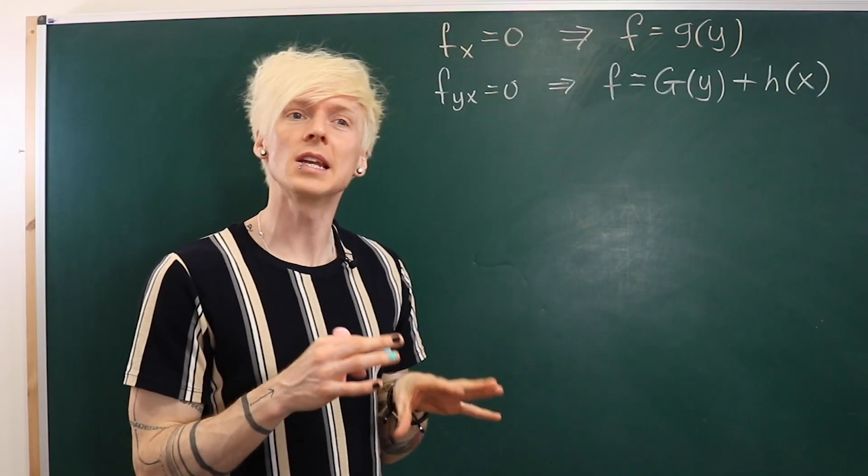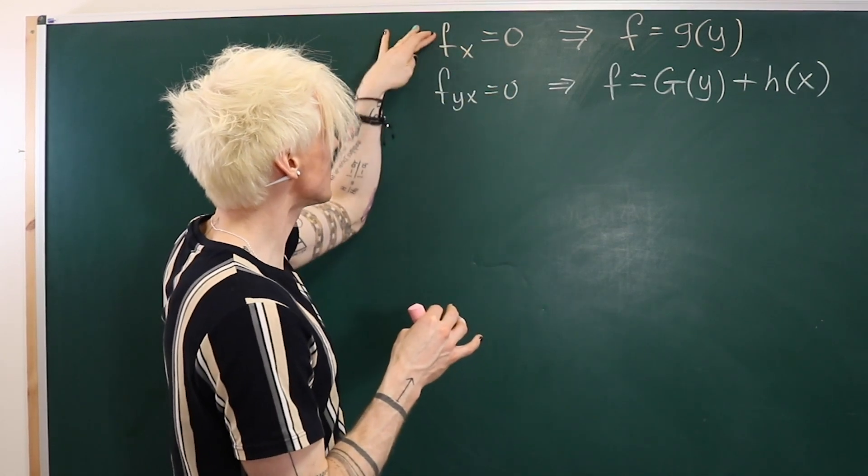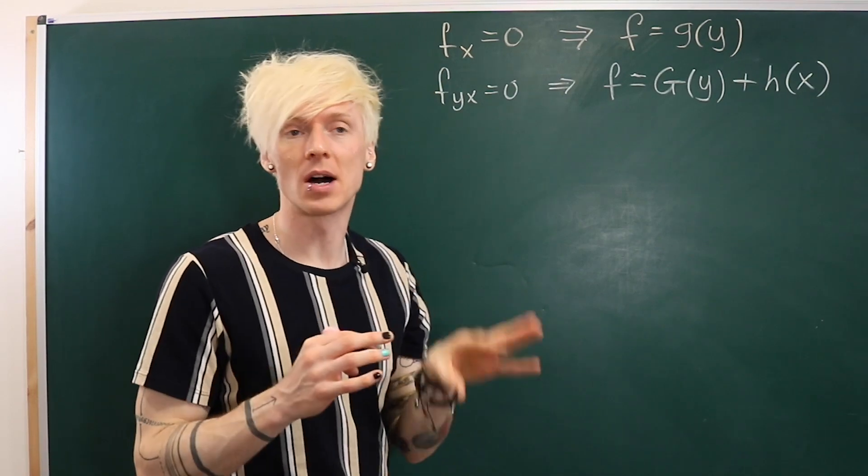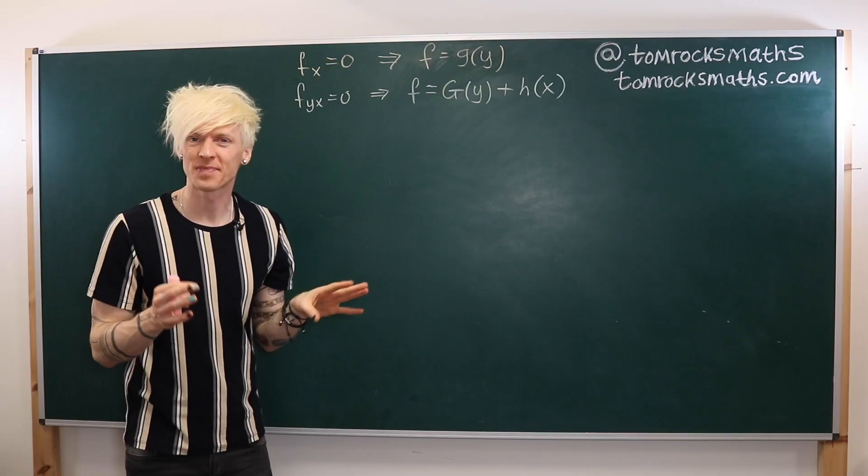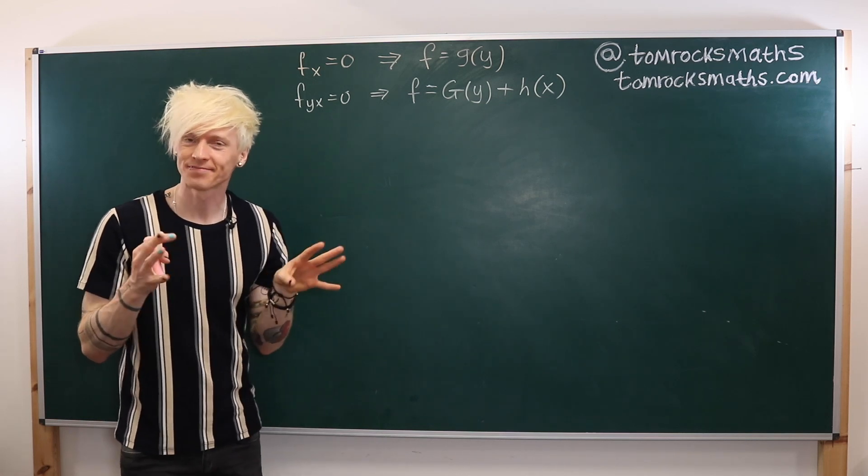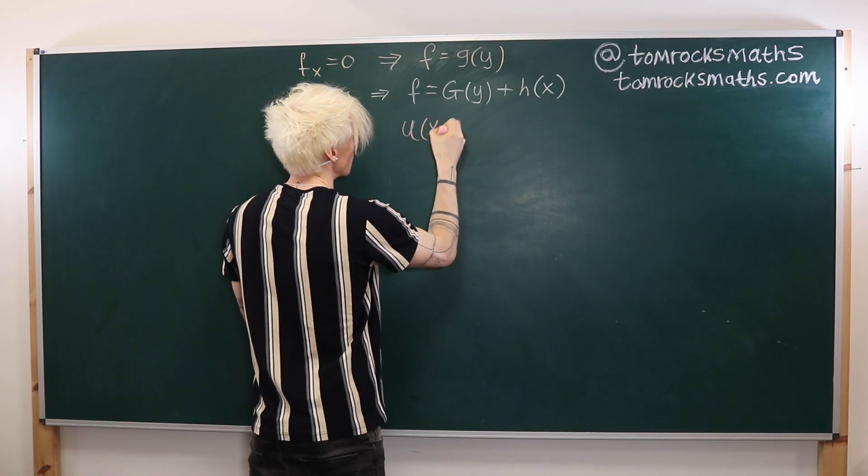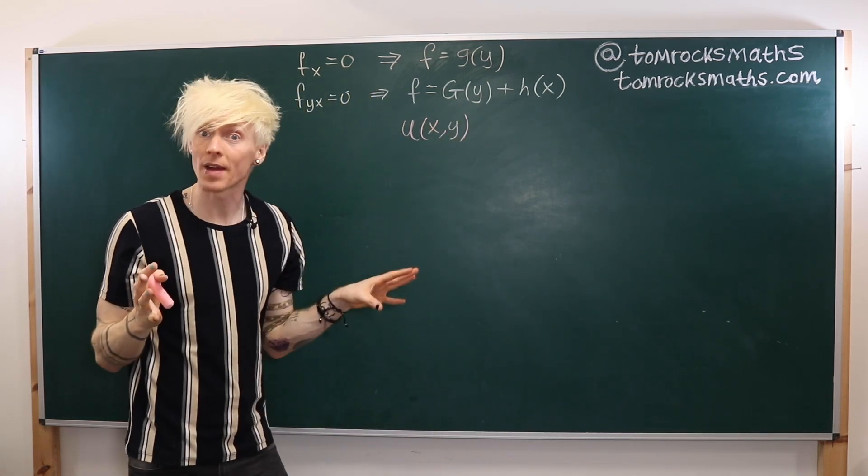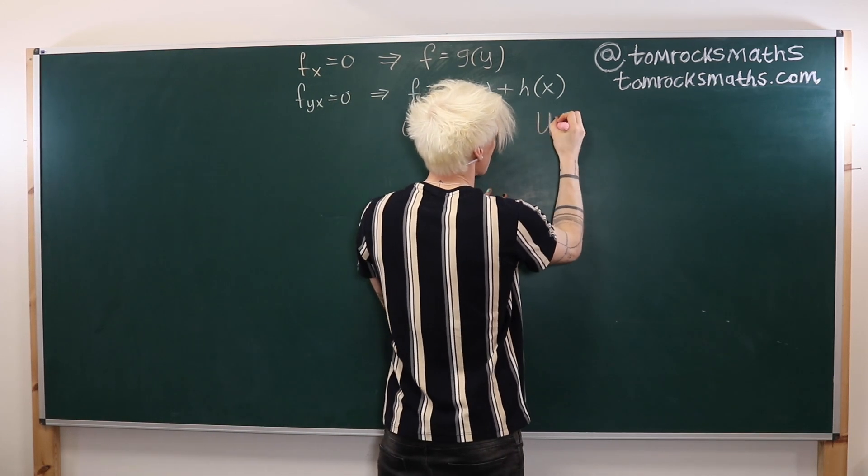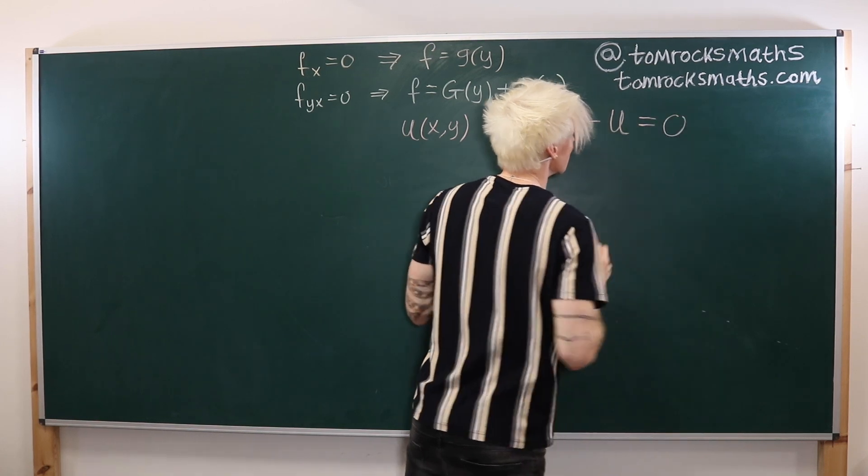So far we've only looked at simple PDEs in the sense that in both cases we have them equal to zero. They were homogeneous partial differential equations. Now let's look at something slightly more complicated. So we're going to consider a function u of x, y. So again a function of two variables and this is going to satisfy uxx minus u is equal to zero.